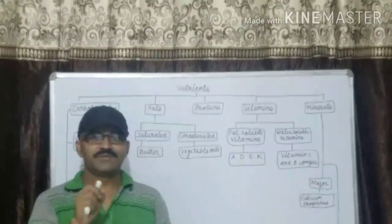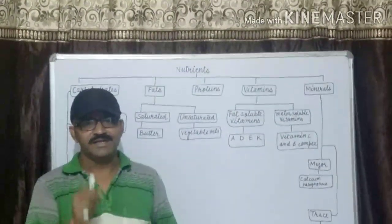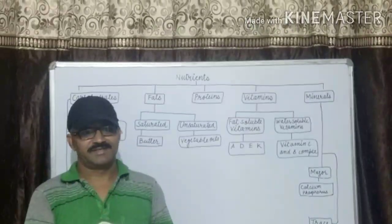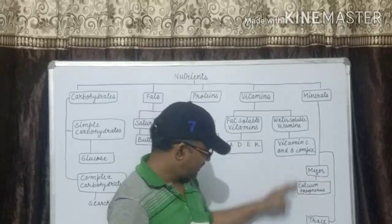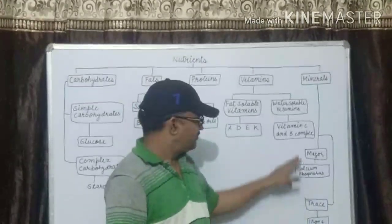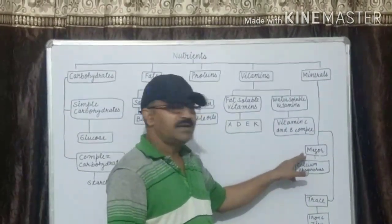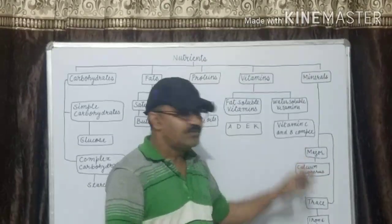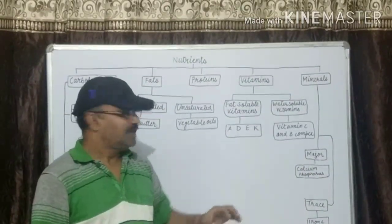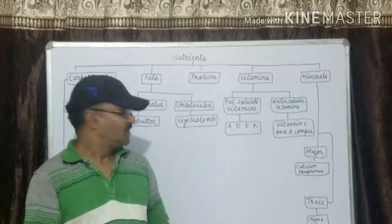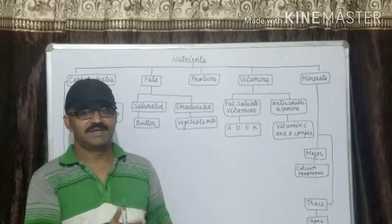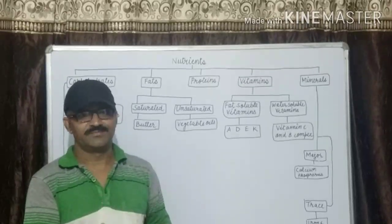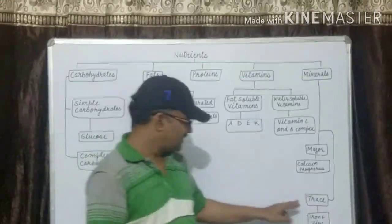Next is minerals. Minerals are needed for the formation of bones, teeth and red blood cells. There are two types: one is major and second is trace. Major: these types of minerals are required for our body in large quantity. For example, calcium, phosphorus, magnesium, sodium.